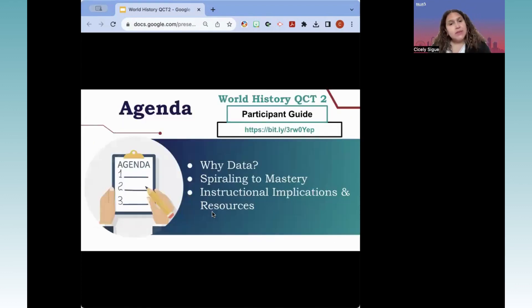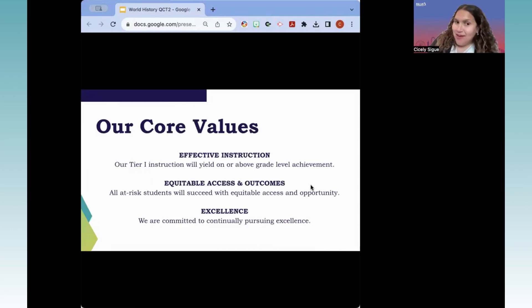In case you missed the participant guide, here's another opportunity to access the world history participant guide. Here is our specific agenda focuses. We will first start with why data, then we will go into Spiraling to Mastery, and last but not least, covering some of the instructional implications and resources provided by the district that you have available. Please don't forget our three district core values as we are out there in the field doing the great things with our students, and that is effective instruction, equitable access and outcome, and making sure that we always commit to continual pursuing of excellence.